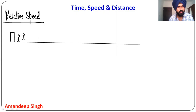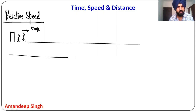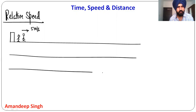A and B are two people. And suddenly, A starts moving at 5 meters per second speed.